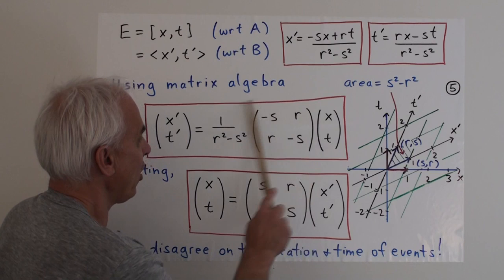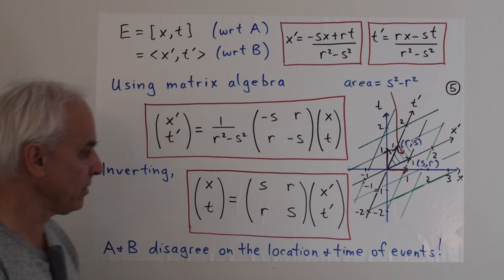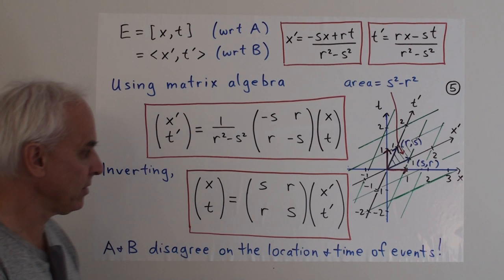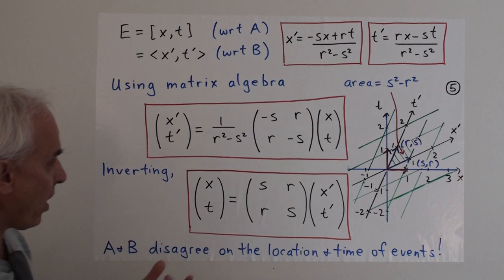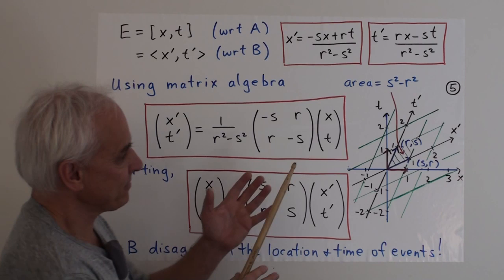Please check that this matrix is the inverse of that one — you can just do that directly by matrix multiplication. So the inverse relationship is very much like this relationship, except that a minus sign is missing. We can now use this to show what B's coordinates look like in our space-time diagram.